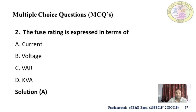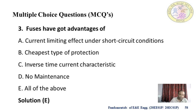Second: the fuse rating is expressed in terms of — current, voltage, KVA, or KVA? Fuse rating is expressed in terms of current, that is amperes — so the first option is correct. Third: advantages of a fuse include current limiting effect under short circuit conditions, cheapest type of protection, inverse time-current characteristics, and no maintenance — all of the above are correct.